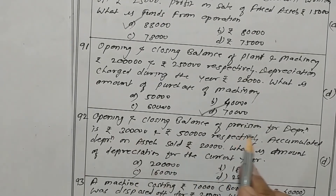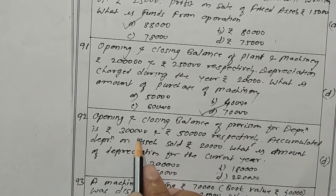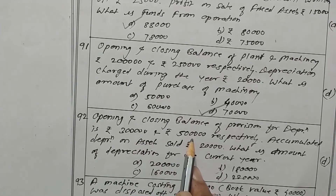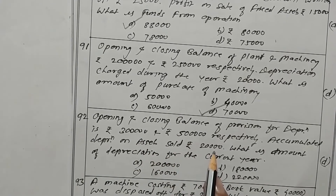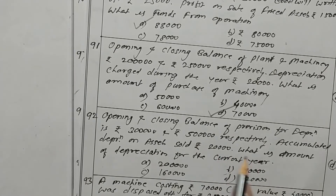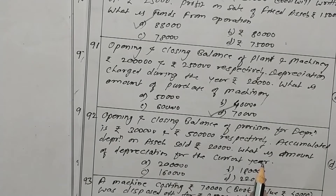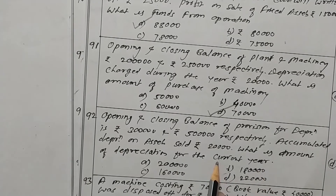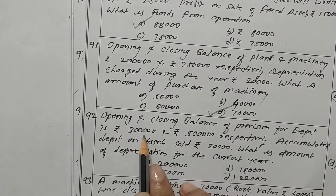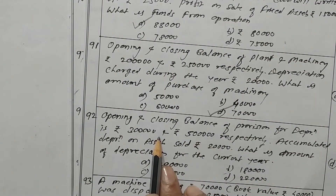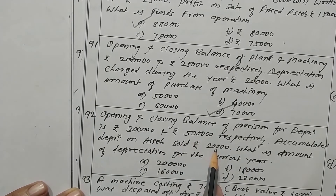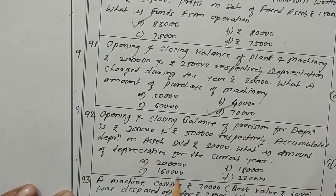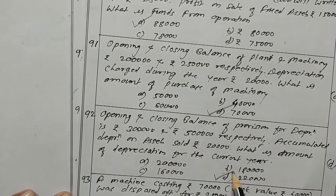Opening and closing balance of accumulated depreciation is rupees 3 lakhs and rupees 5 lakhs. Accumulated depreciation on assets sold is rupees 20,000. The difference in accumulated depreciation is rupees 2 lakhs. Option D is the correct one.